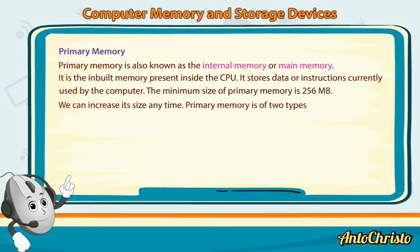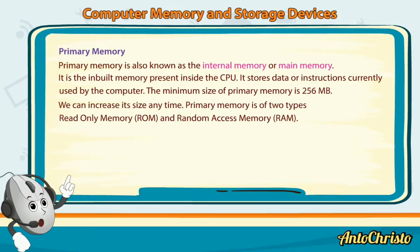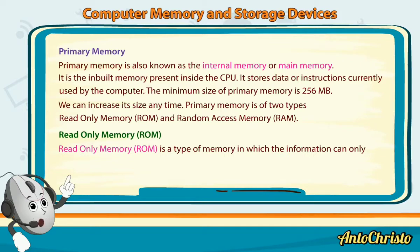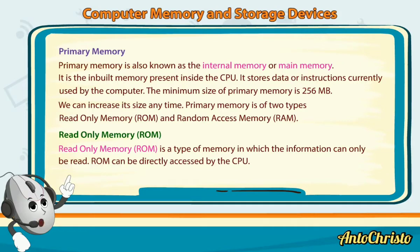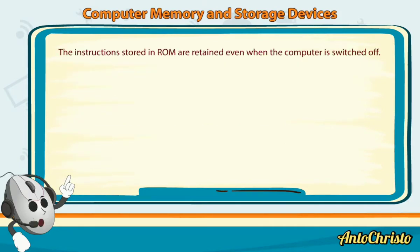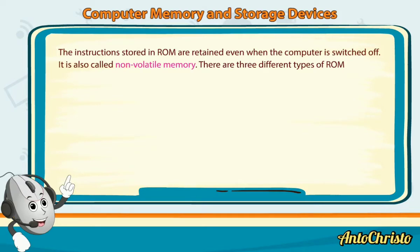Primary Memory is of two types: Read Only Memory (ROM) and Random Access Memory (RAM). ROM is a type of memory in which the information can only be read. ROM can be directly accessed by the CPU. The instructions stored in ROM are retained even when the computer is switched off. It is also called Non-Volatile Memory.